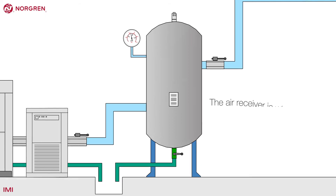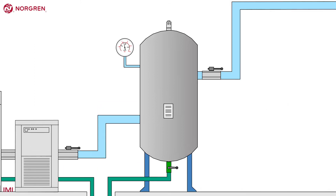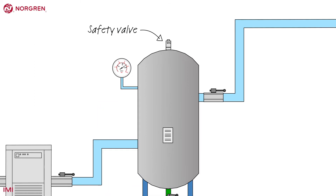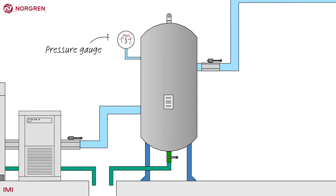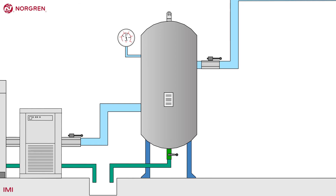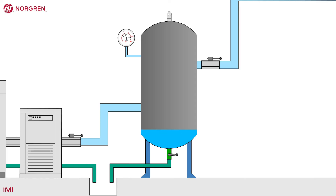The air receiver is where the compressed air is stored — think of it as a battery; it's where the energy is stored. The safety valve will release air if the pressure rises above the set pressure, for example 10 bar. The pressure gauge displays the pressure inside the tank. It's advisable to locate the air receiver in the coolest place possible without dropping below freezing. Cool air holds less water and is denser. In the receiver the water condenses and drops to the bottom of the tank, and so less air is stored in this space.